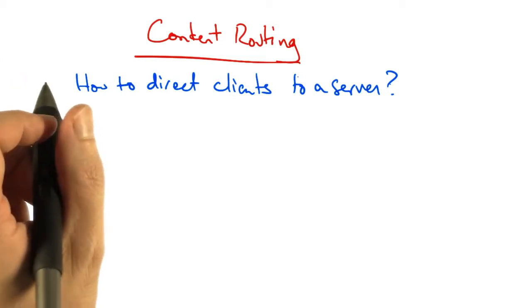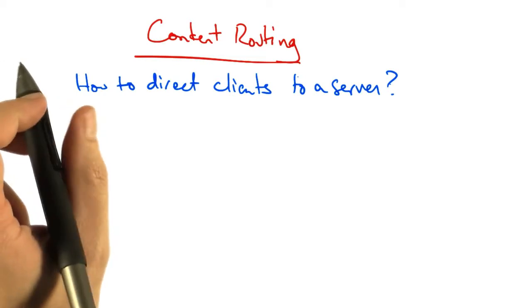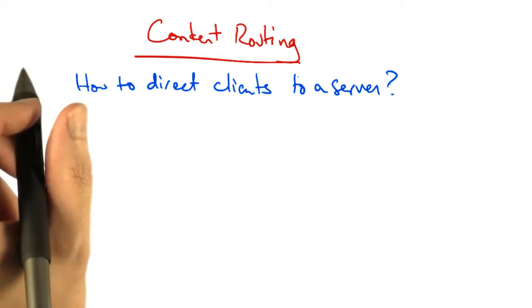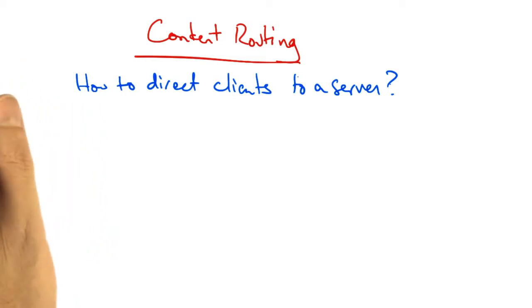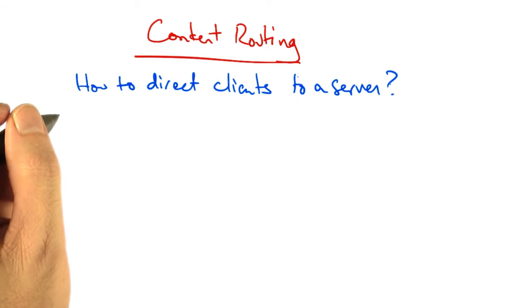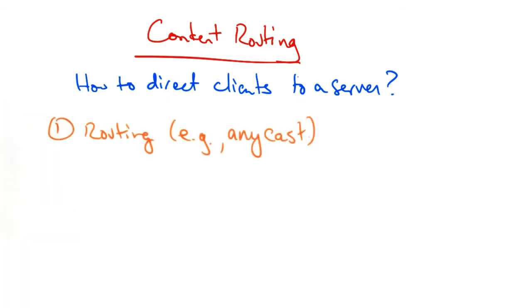Content routing concerns how to direct clients to a particular server. One might do this in a number of ways. One could use the routing system, for example, Anycast.